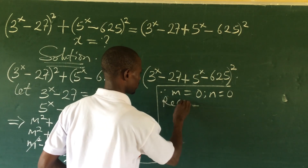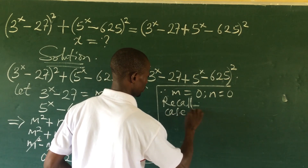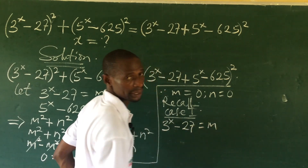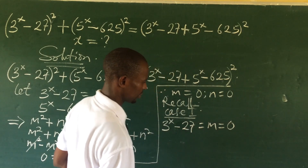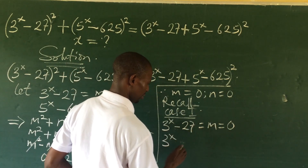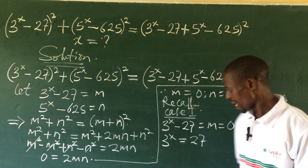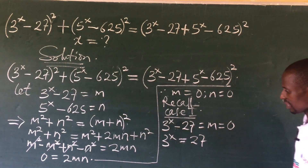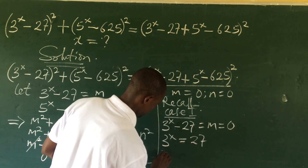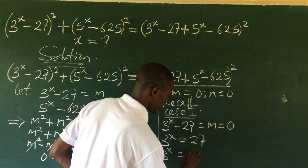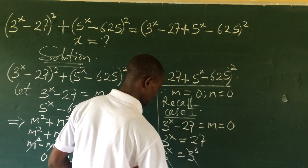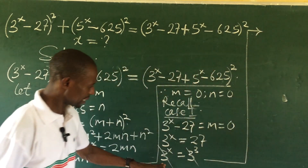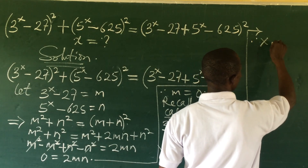Case 1: We have 3^x − 27 = m = 0. Sending 27 to the other side gives 3^x = 27. Since 3³ = 27, we rewrite this as 3^x = 3³. The bases are the same, so we equate the exponents and get x = 3.